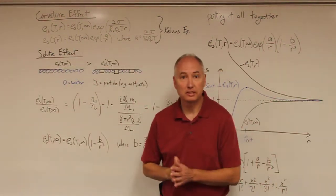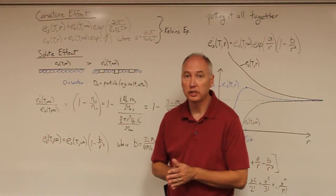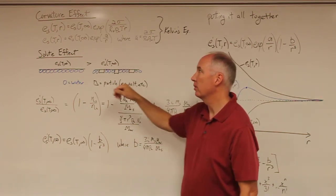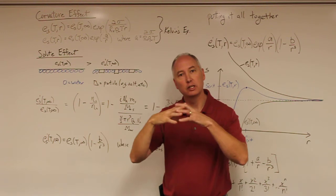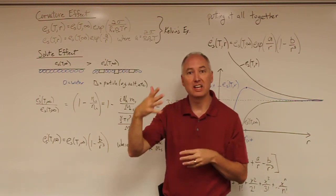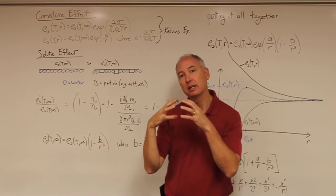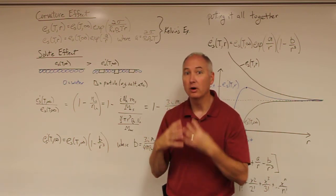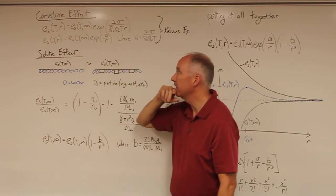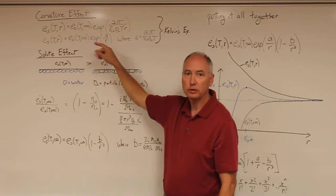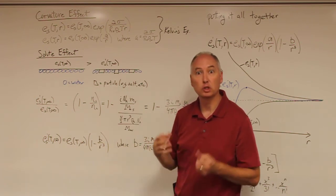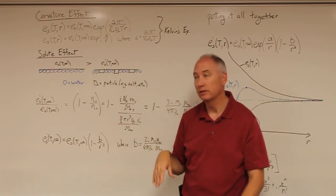Last time in the physics of condensation, we came up with the Kelvin equation, which describes the effect of the curvature of the radius of a droplet on the saturation vapor pressure above that curved surface of pure water. We determined that the curvature effect caused the saturation vapor pressure over that curved surface to be much greater than over a plain surface of pure water.